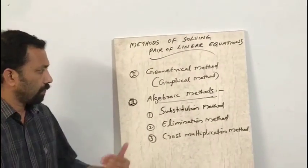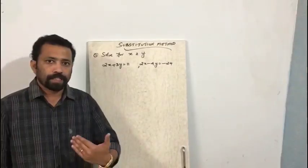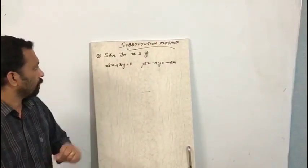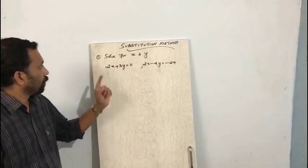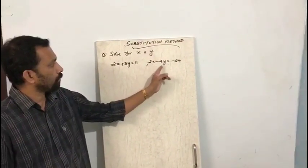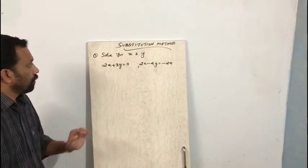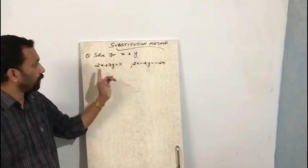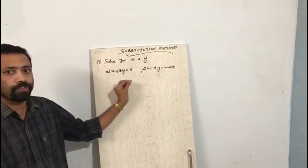We will discuss them one by one. First we'll go for the substitution method with the help of some examples. The first question: solve for x and y — 2x plus 3y is equal to 11, and 2x minus 4y is equal to minus 24. These are the two given equations, and we have to find the values of x and y that satisfy both equations — that is called the solution.